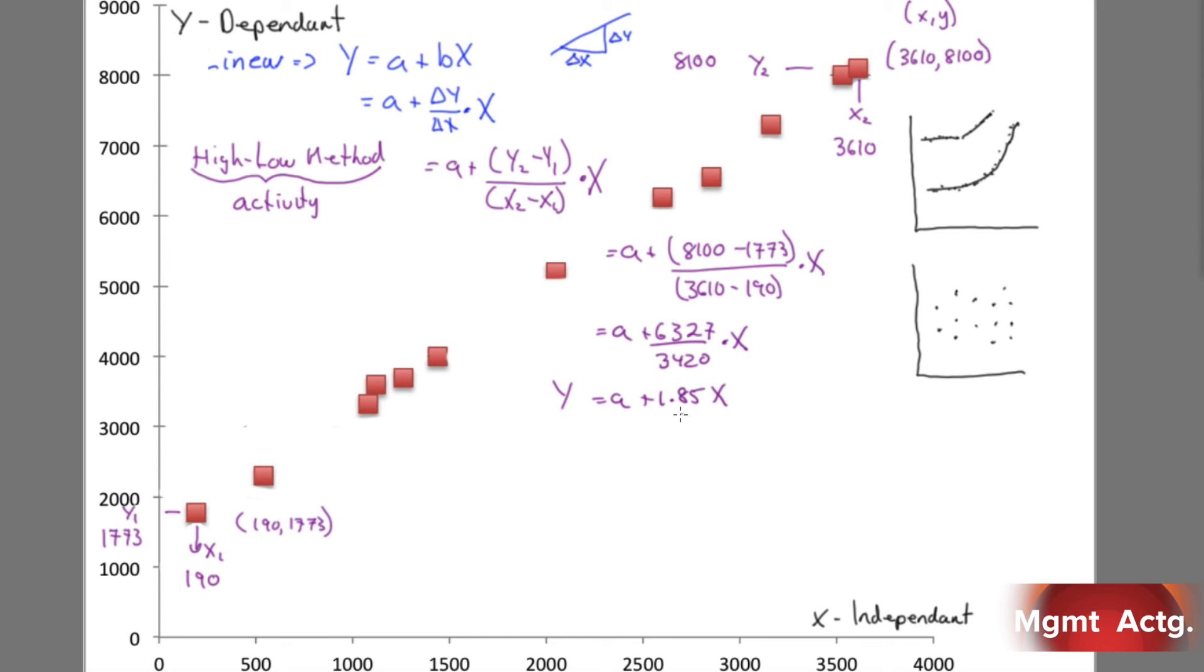And you're probably saying so what do we do with that? Well, we know the slope is 1.85, which means we know our variable cost is 1.85. So we incur a cost of a dollar 85 per x for every x, but what's our a?